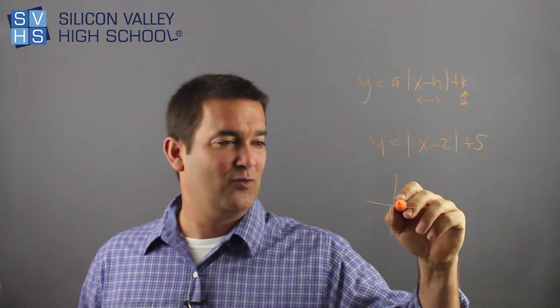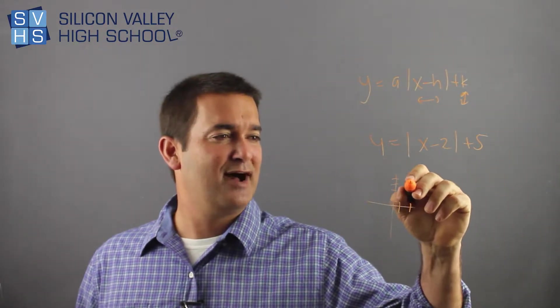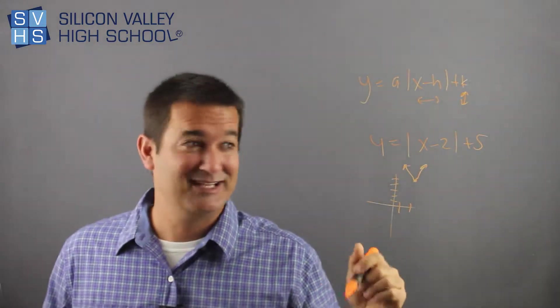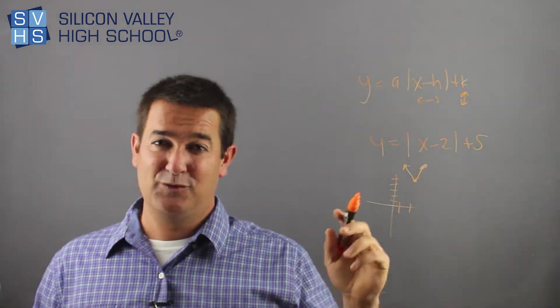So your V would start 1, 2, 1, 2, 3, 4, 5 here. And it would be like that with no difference in the V-ness because A, we'll talk about in a second, was just 1.